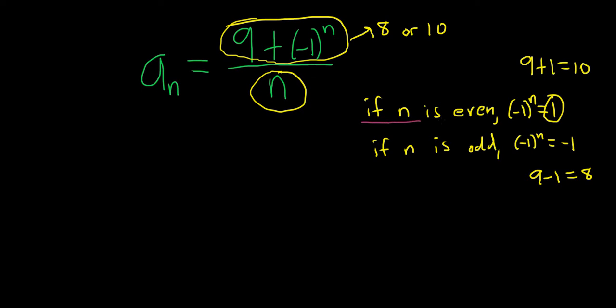So if n is even, negative 1 to the n is negative 1 to an even number, so it's 1. If n is odd, you get negative 1 to an odd number, so it's negative 1. So if it's even, you're adding 9 plus 1, so you get 10. If it's odd, you're doing 9 minus 1, so you get 8.